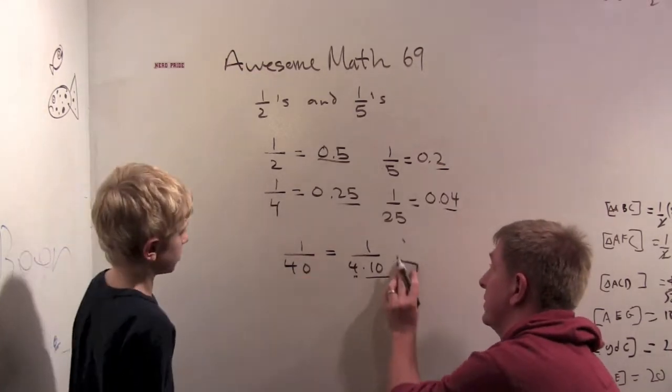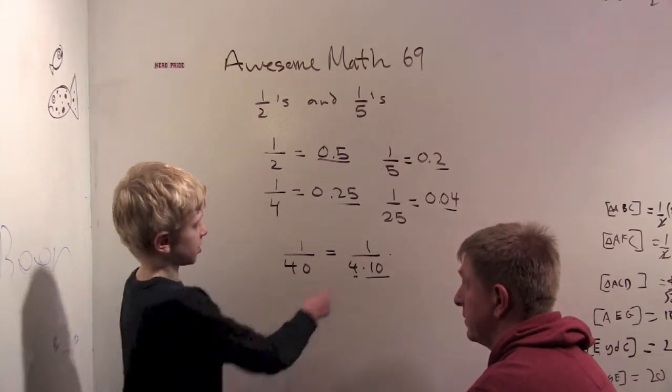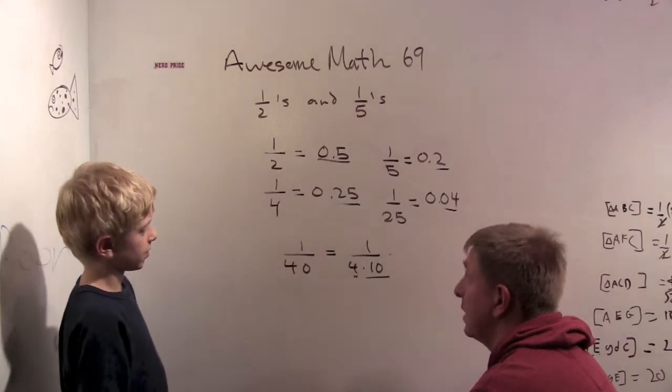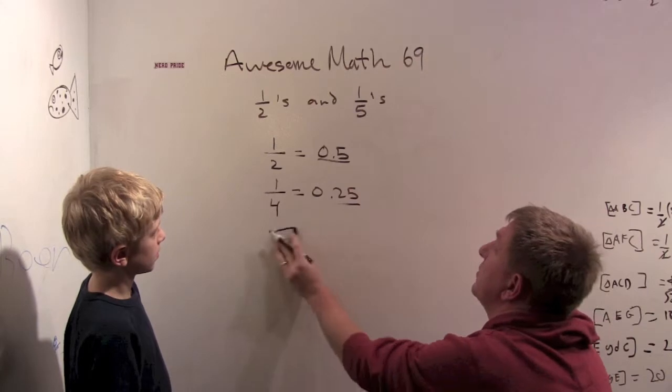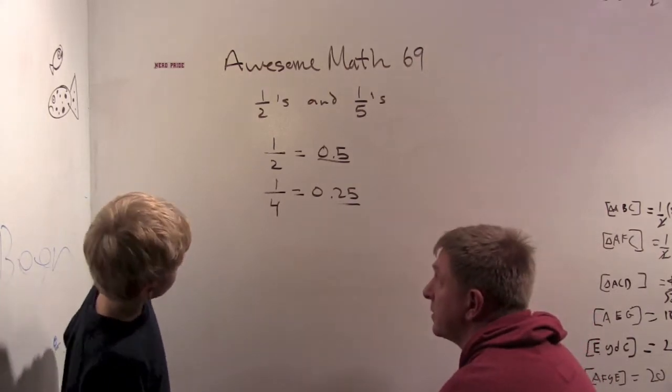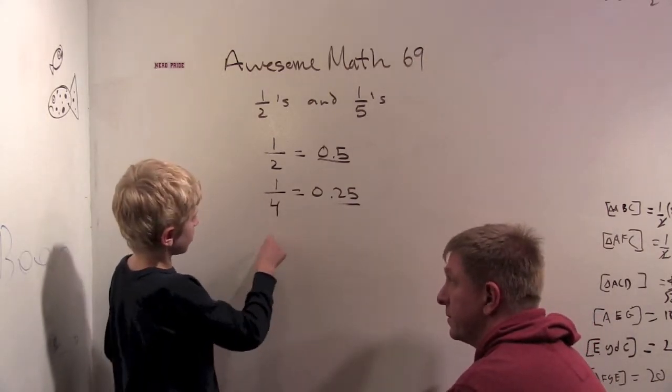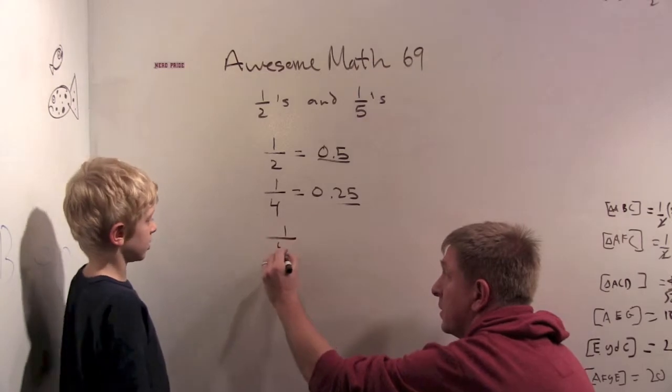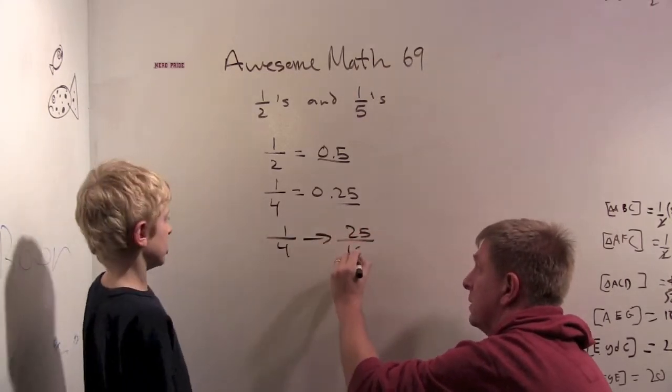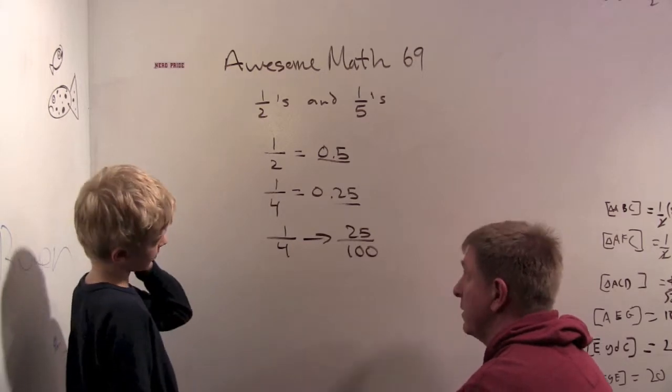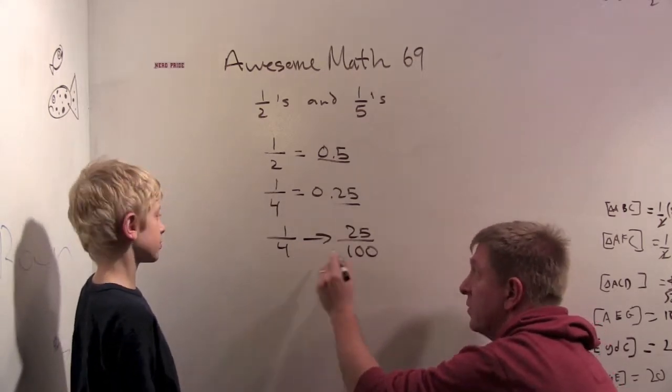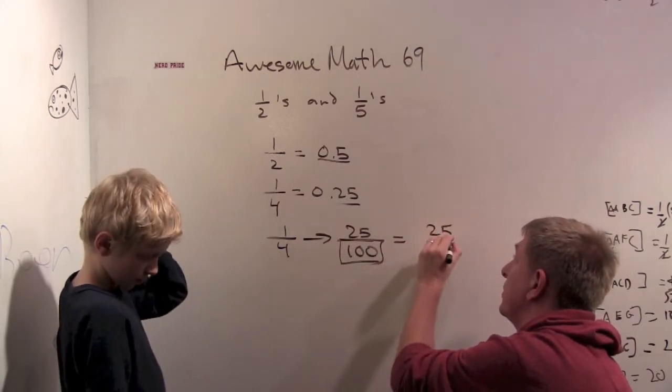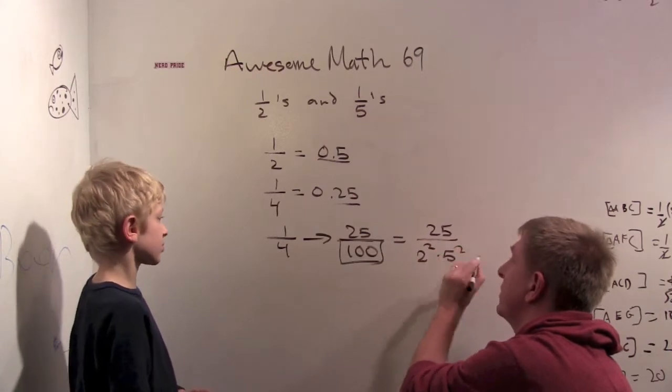Well, you can multiply by something on the top to cancel it out. What did we do with one-fourth? We multiplied, one over four became twenty-five over a hundred. So we tried to make it a nice number, like maybe a multiple of a hundred. What we liked having was the same numbers of twos and fives on the bottom. When we factored, this is twenty-five over two squared times five squared.